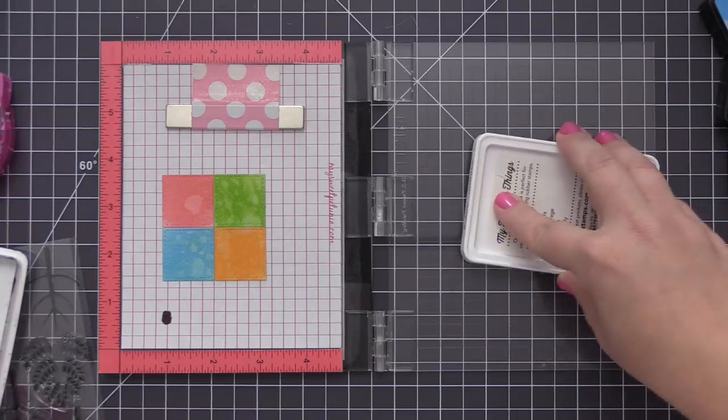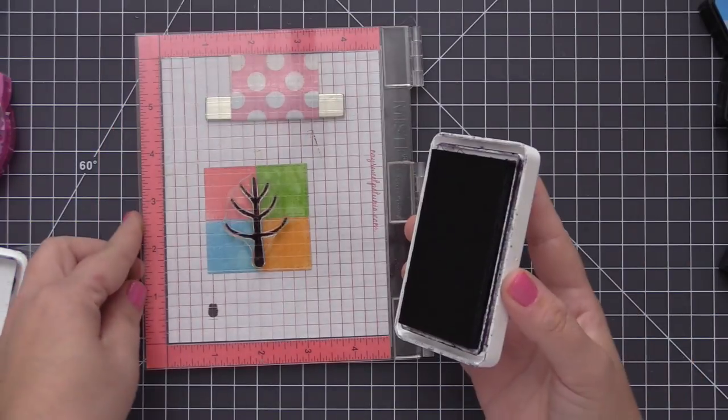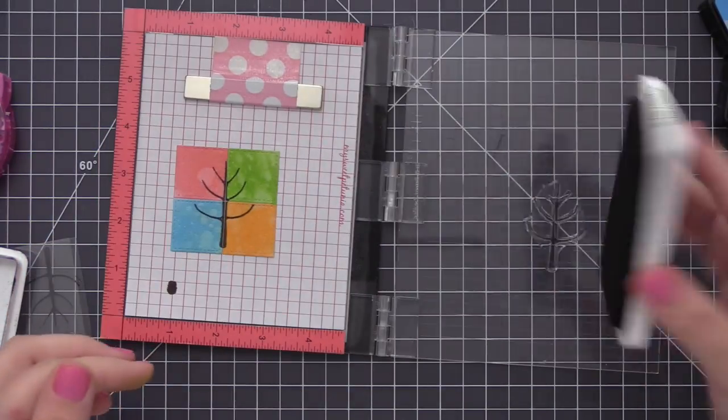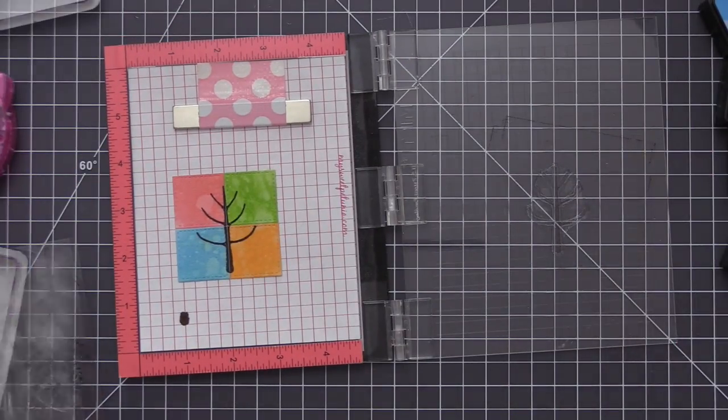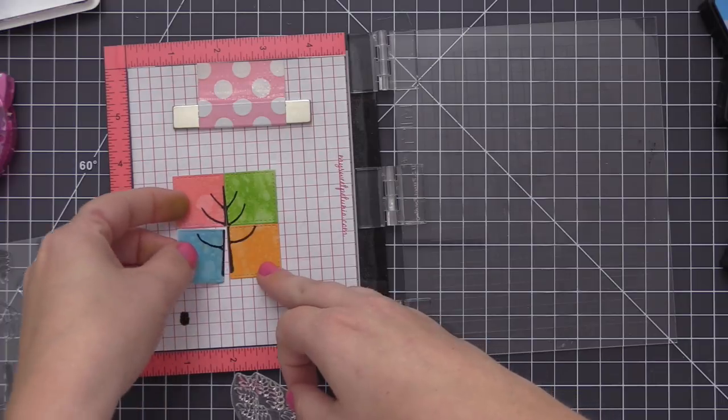I'm going to stamp this with black ink. I was going for like a more modern kind of artsy look. I wanted to just have the black tree over top of all of the colored squares so I went ahead and did that part first.